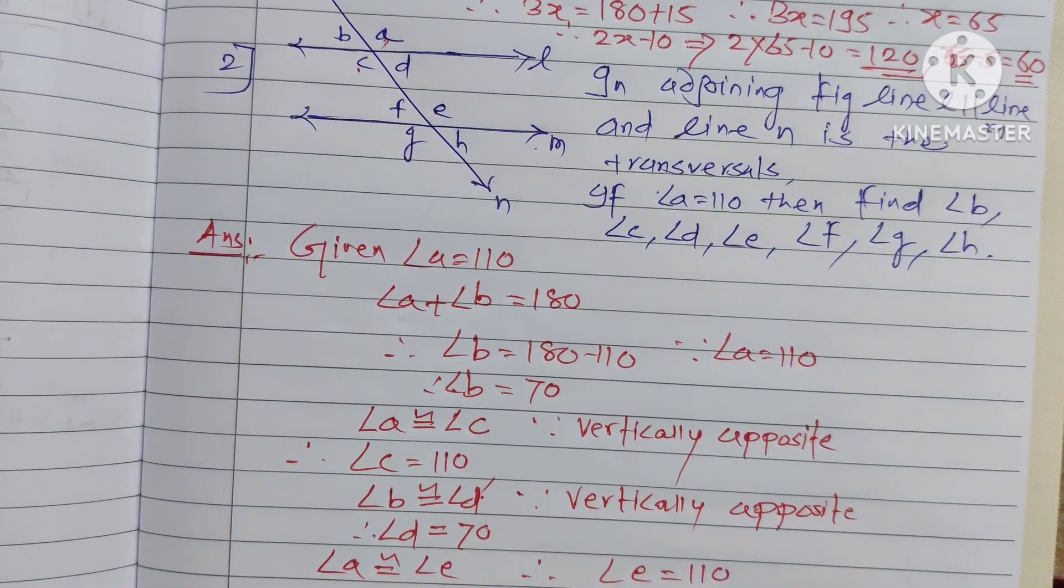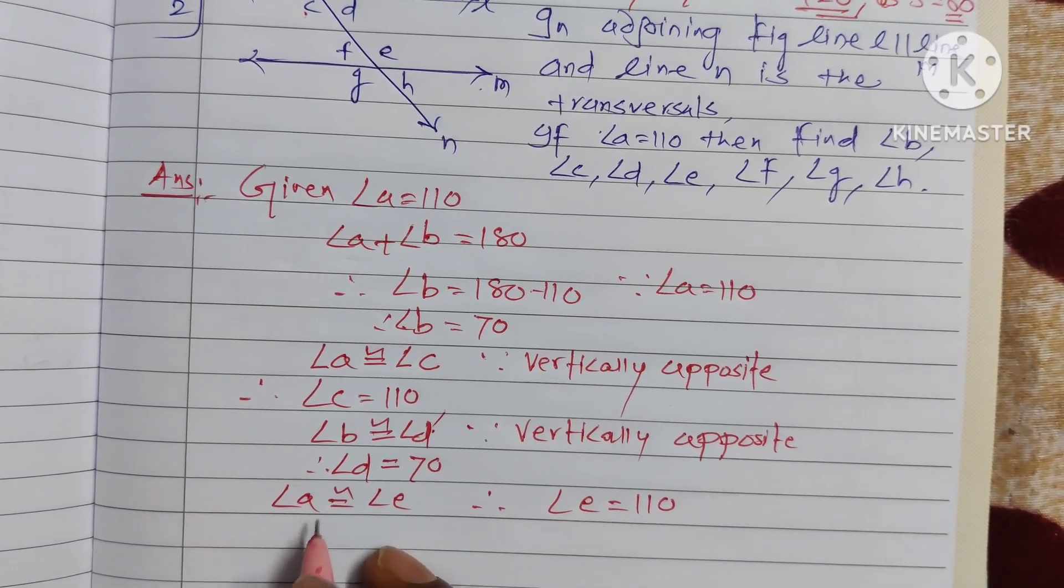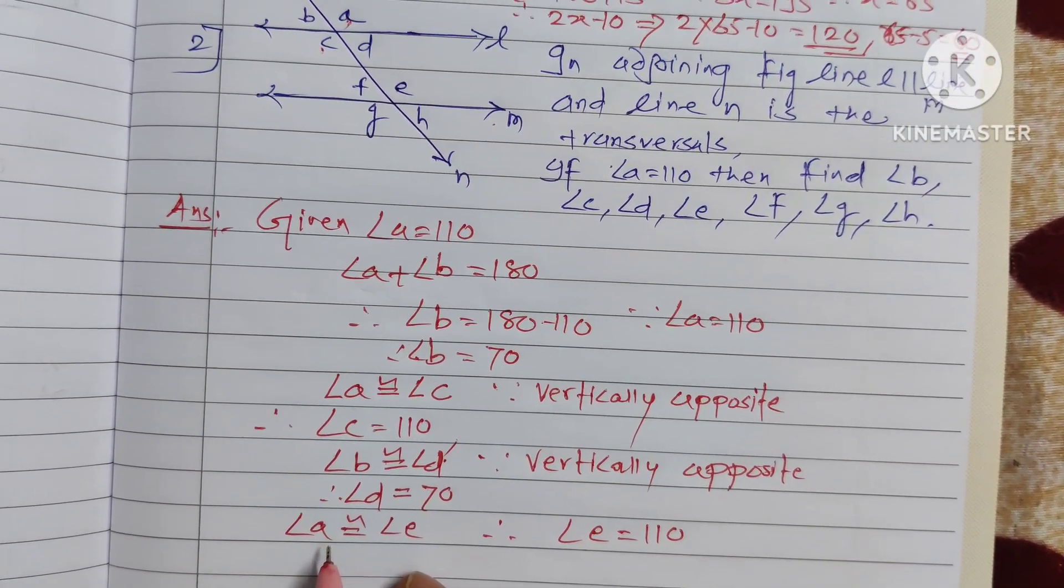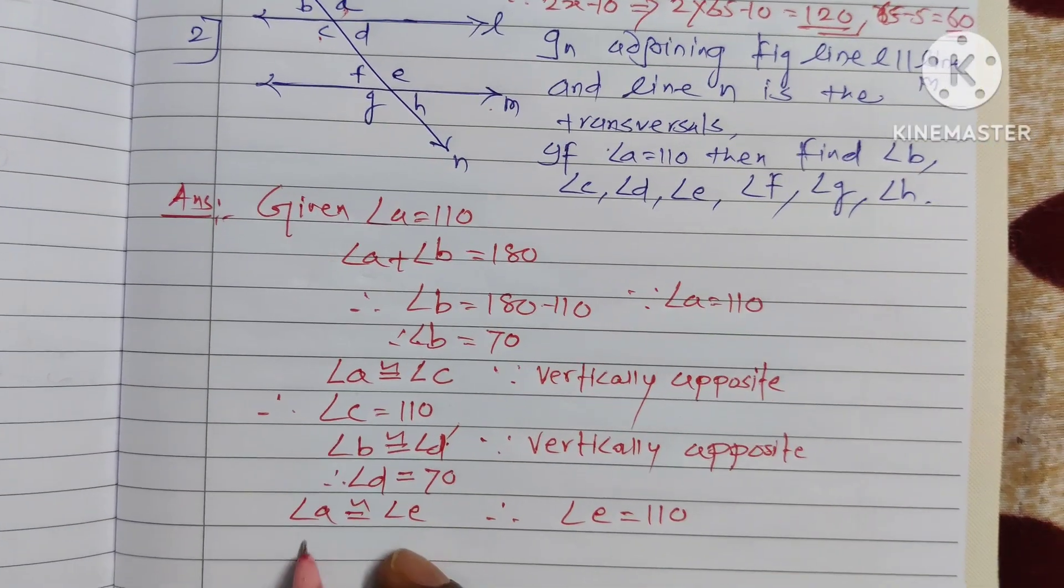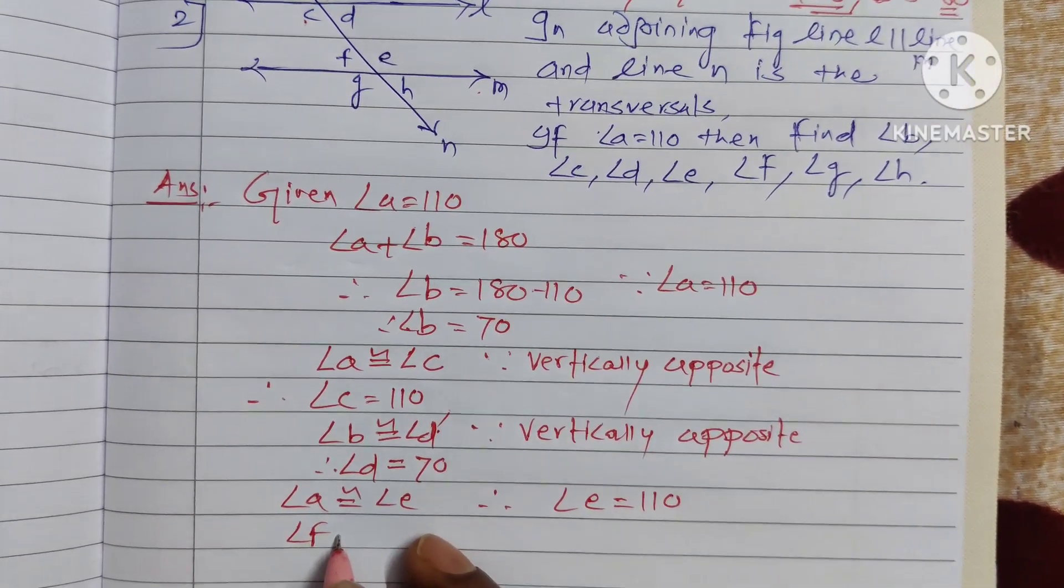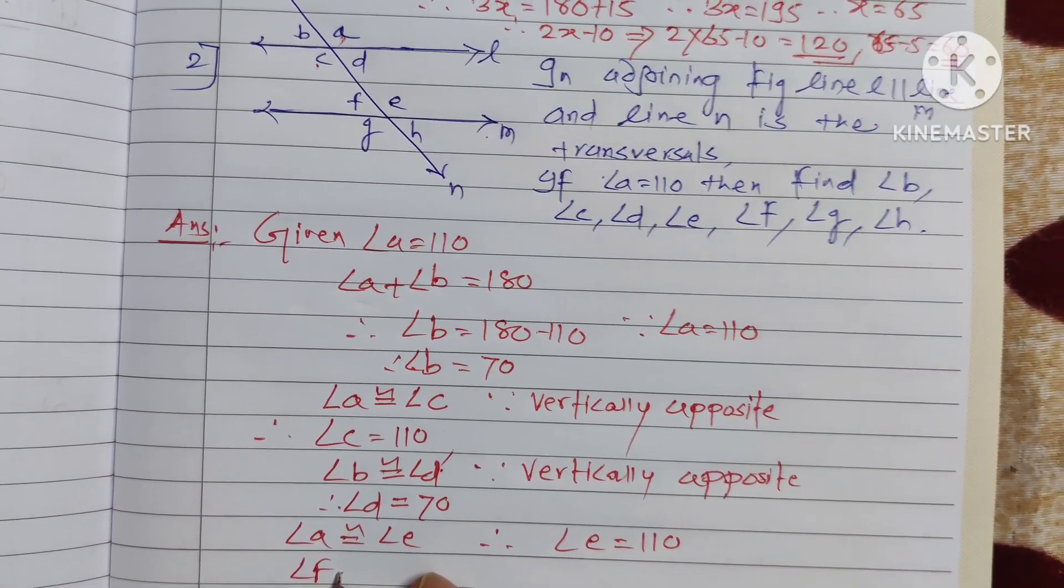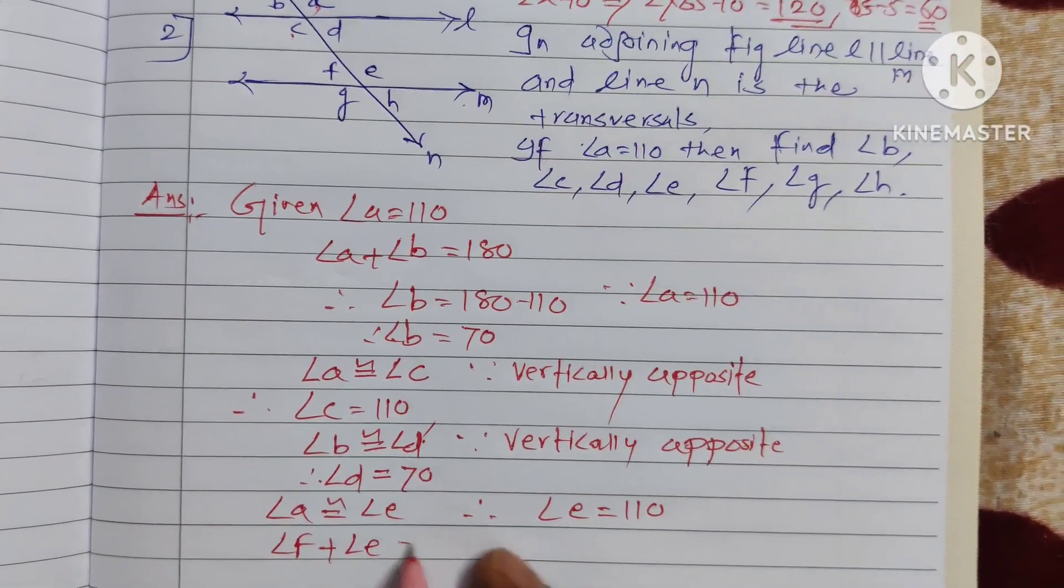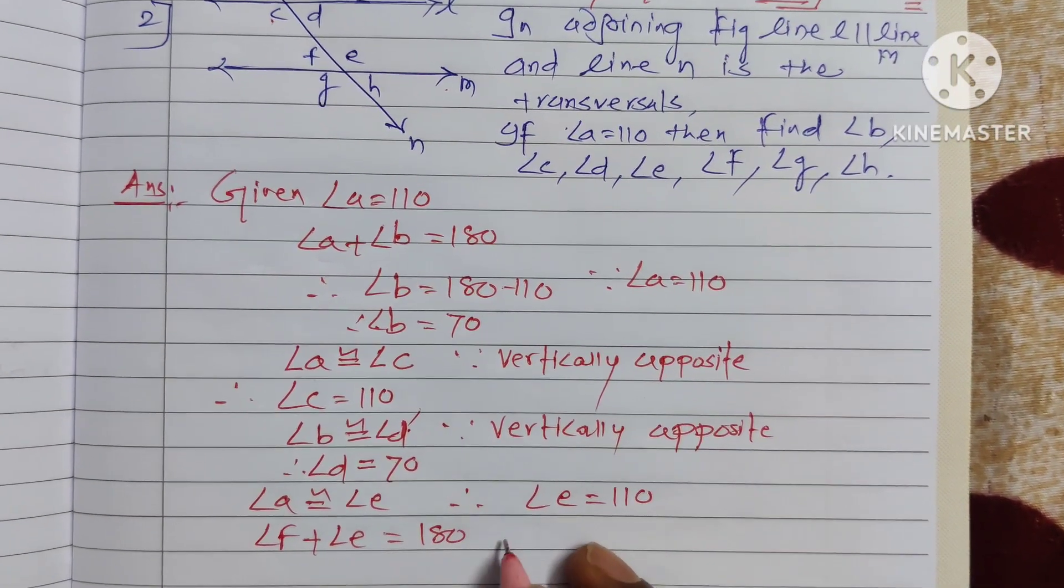Now angle f and angle e equal to 180 because they are in linear pair.